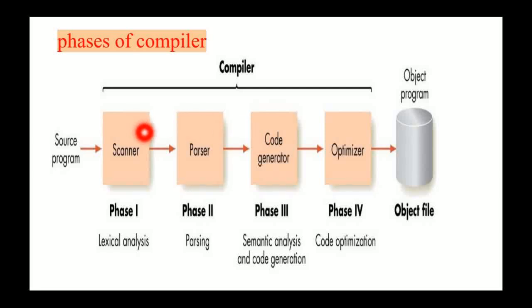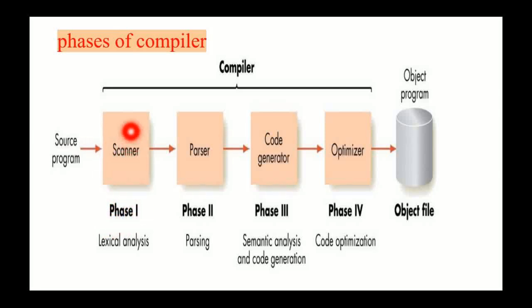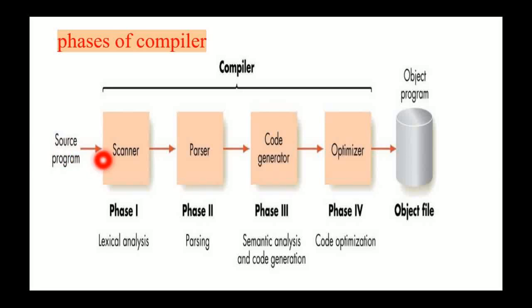Here is a typical compiler diagram. The source code will pass through lexical analysis — this is phase one. Lexical analysis scans our source program and after scanning, it produces tokens. These tokens will then pass to the next phase.